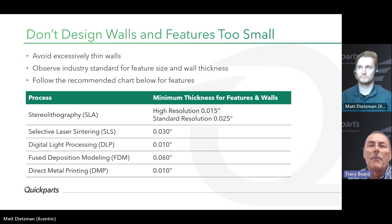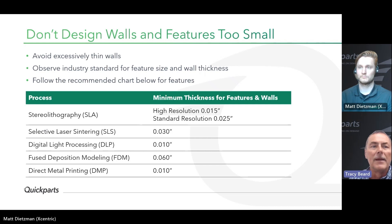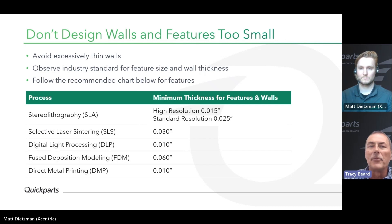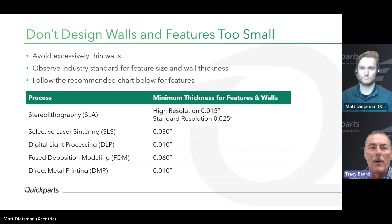The first topic is: don't design walls and features too thin. This is probably the most common issue we see when reviewing files for printing. We always tell people to avoid excessively thin walls and small features. Often, thin walls and small features can be printed but they can't survive the post-process cleaning and finish steps without damage. A common question is how thin a wall or how small a feature we can build.